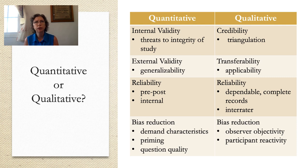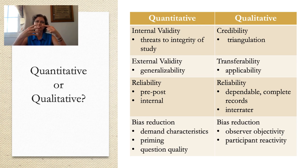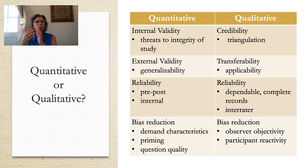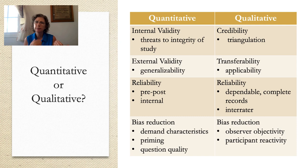A lot of times we take data and quantify it. For example, college year: one is freshman, two is sophomore, three is junior, four is senior — it was more qualitative in nature as a category, but we're quantifying it so we can use it in analyses. So they do blend a little bit.